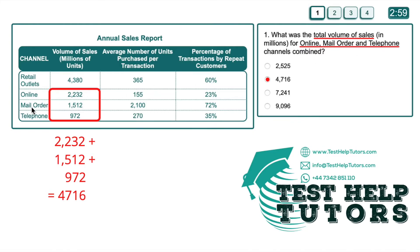Online, mail order and telephone — so the figures we need to work with are these three figures here. To work out this problem, all we simply have to do is add up these three numbers, and that will give us 4716. So our answer is this second option here.